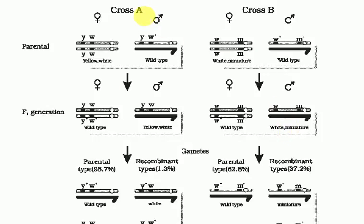Morgan has done two experiments, so we are going to take an overview of both — how linkage and recombination actually works. There is Cross A and Cross B with different characters. In Cross A, the parental characters are yellow body and white eye. In Cross B, the characters are white eye and miniature wings. The second organism in both crosses is of wild type.